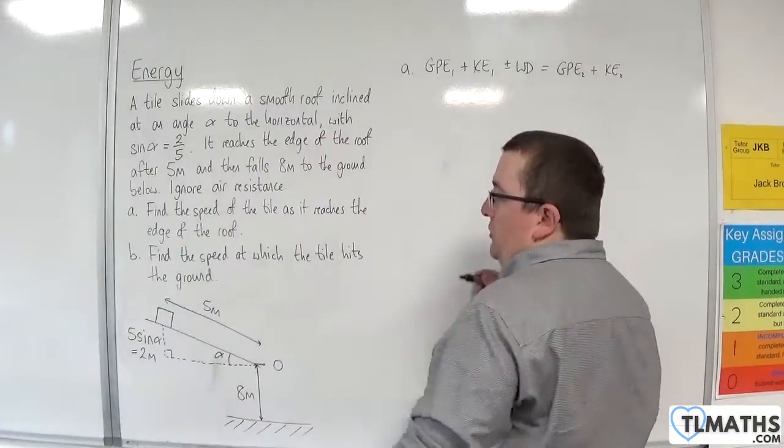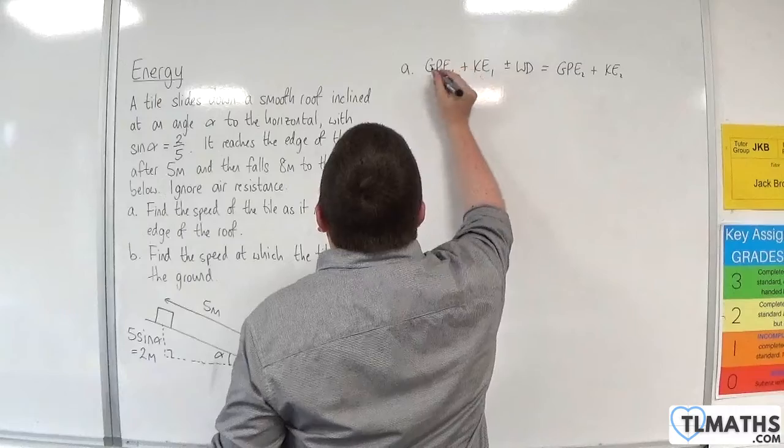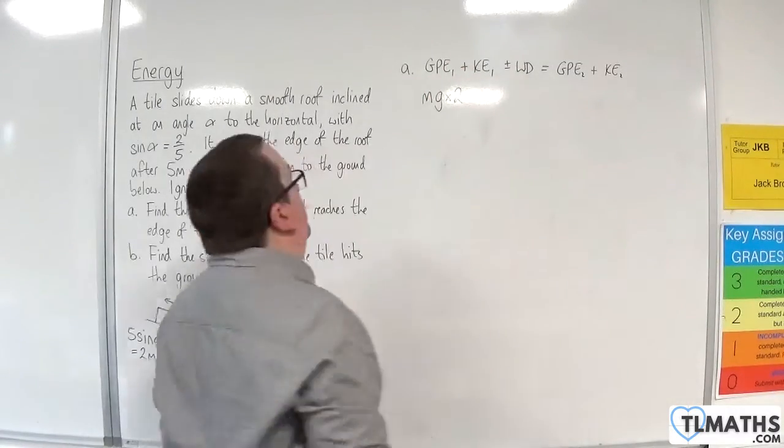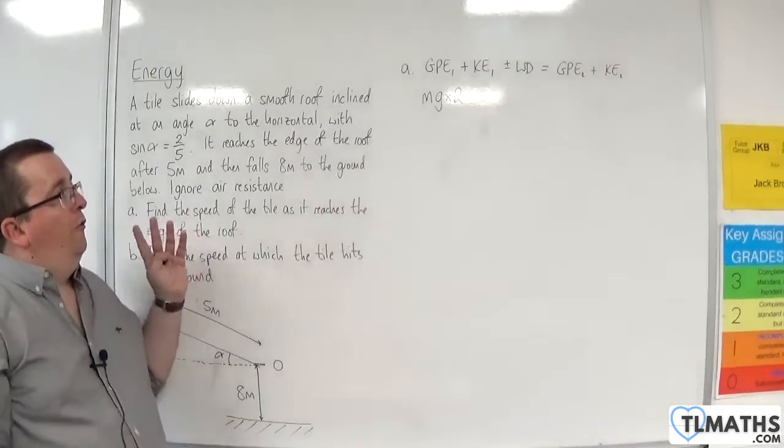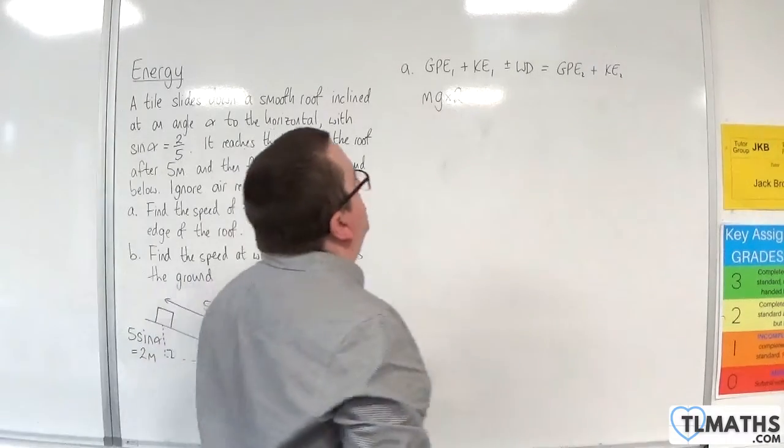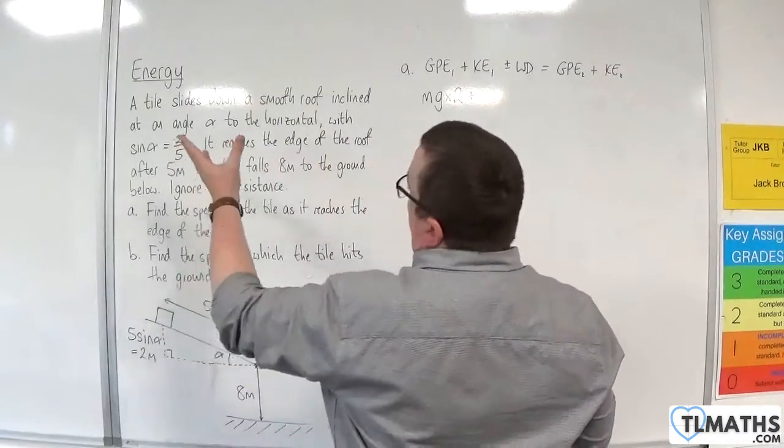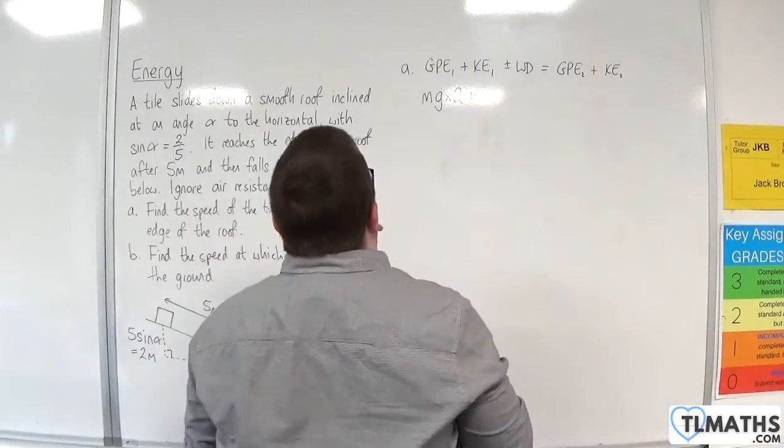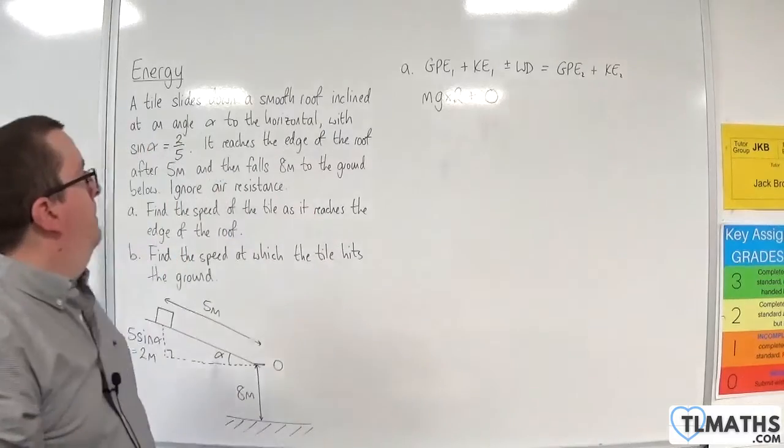So we're initially two metres higher than where we finish up. So the gravitational potential energy will be m times g times h, which is two. Now, I'm not told the mass of the tile in this question. What we'll find is the mass cancels anyway, so I don't need it in the problem. Then we've got the initial kinetic energy. So we can assume that the tile starts from rest, because it slides down the smooth roof. So we're going to put that at zero.